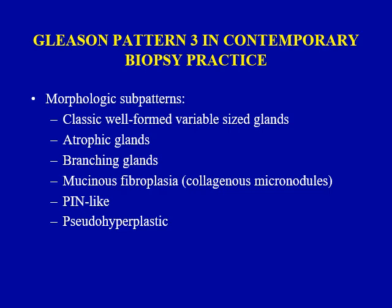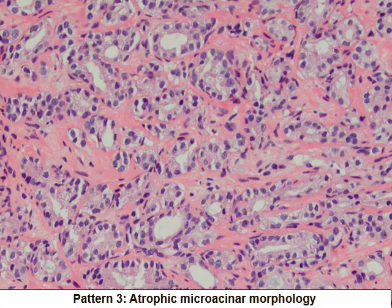I will go over each of these morphologic variations in individual example forms. Here is an example of atrophic, also known as microacinar, Gleason pattern three. Glands are small and atrophic but they still have a recognizable lumina. It is very important not to consider this as a poorly formed Gleason pattern four, which I will talk about later.